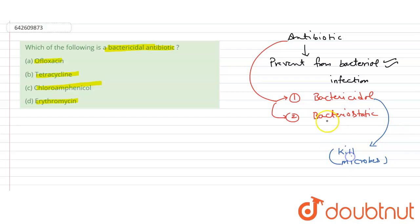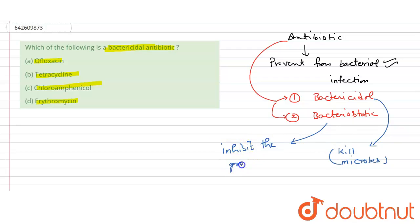While in the case of bacteriostatic antibiotics, they inhibit the growth of microbes. So these are the basic differences between bactericidal and bacteriostatic antibiotics.